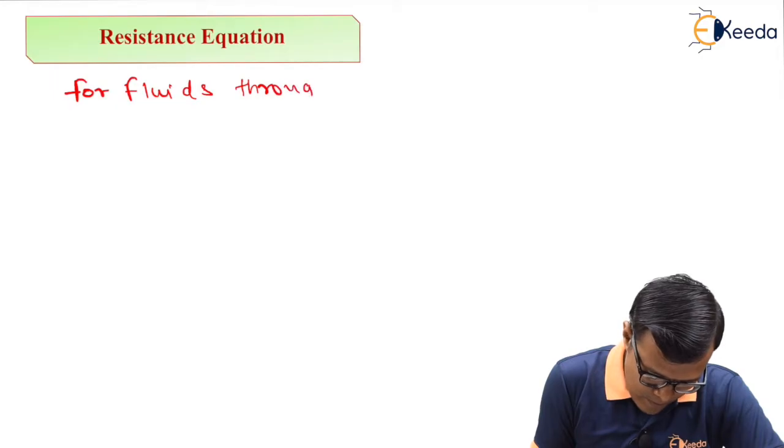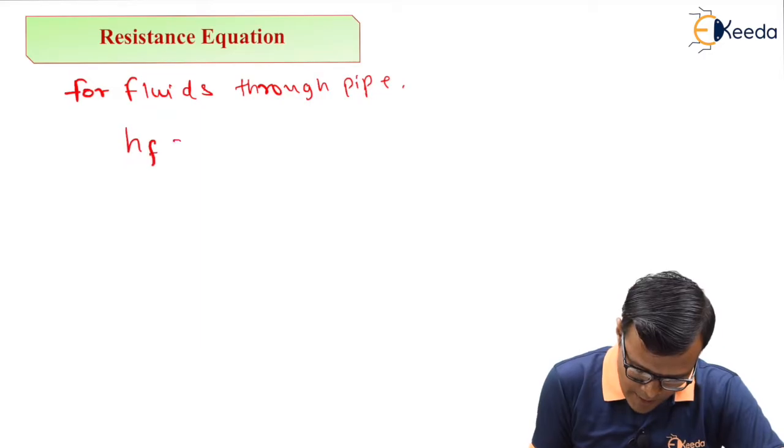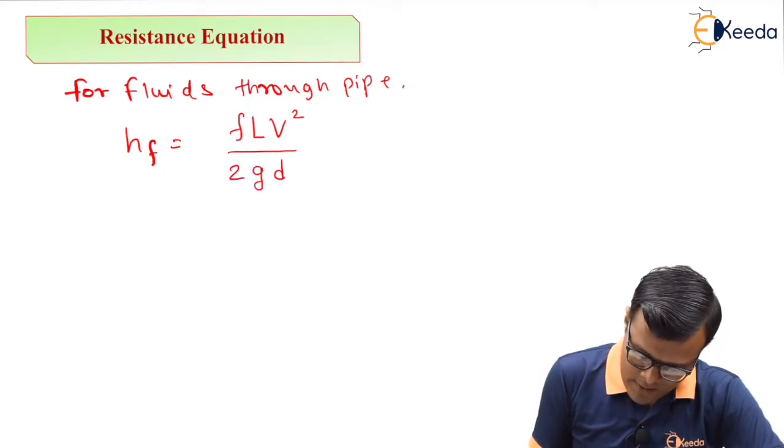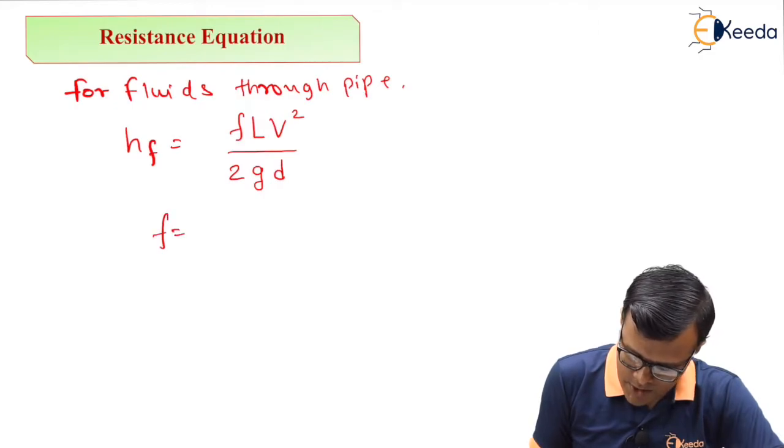Head loss due to friction can be calculated as F L V squared upon 2 g D, where this F is nothing but the friction resistance factor.